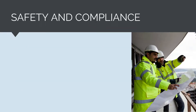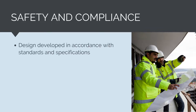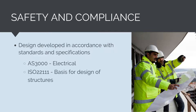The engineering design process should ensure that what is built is safe for operations, maintenance and use. Standards and specifications developed by professional bodies and government agencies form the basis of design. Through the design development process, these standards are referenced and used, and checks are done to ensure compliance to them. Standards like AS-30000, which governs electrical installations in Australia, or ISO-22111, the international standard on the basis for structural design, are used.